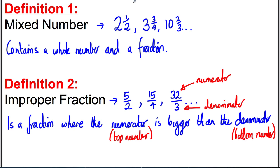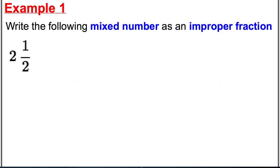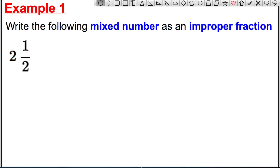So we're going to turn mixed numbers into improper fractions. I want you to do three examples with me — copy these in your book — then I've got some questions for you to do on your own. Example one: write the following mixed number as an improper fraction. Our question is two and a half.